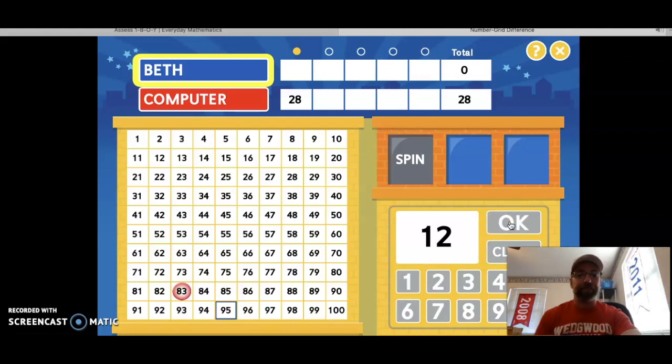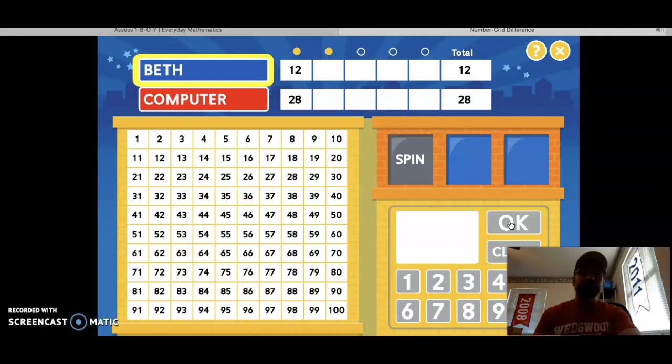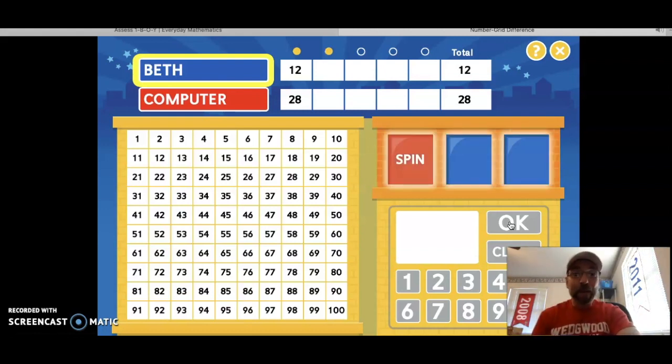I enter in 12 and hit OK. You got it. Notice that I'm winning because my score is less than the computer's. So round two takes place the same exact way. You get to spin a number, and then you get to decide how you want to arrange the digits. And once both numbers are chosen, the person with the lower difference is going to come out on top.